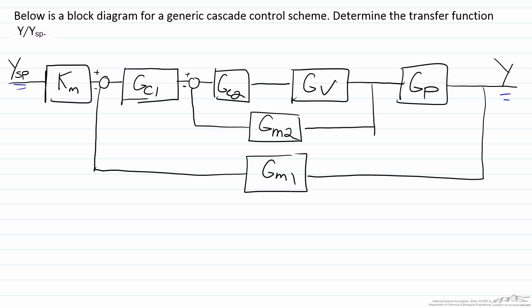Disturbances can also come into play here, which would use a somewhat similar method to find the transfer function y over d, where d would represent a disturbance.